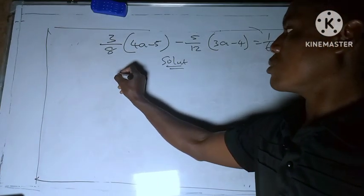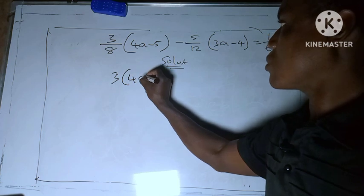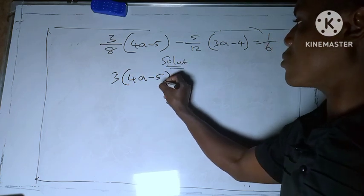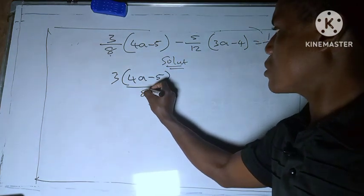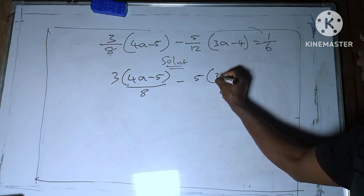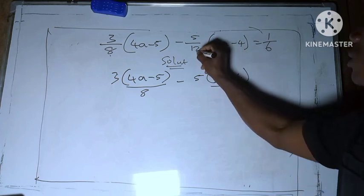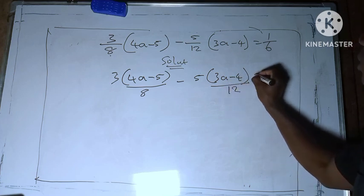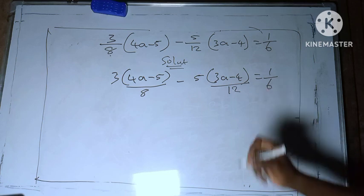So this is what you do. You see 3 bracket 4a minus 5 over the denominator which is 8, minus 5 bracket 3a minus 4 over the denominator which is 12, everything equals to 1 over 6.